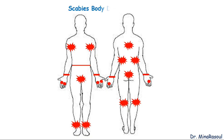As you can see in the picture, the red stars indicate the distribution of cutaneous findings of scabies, which usually involve more than one body area. Rarely, scabies are localized to a single area. The distribution of these cutaneous findings is also a clue to the diagnosis.